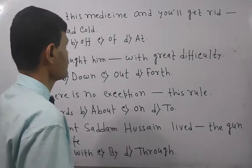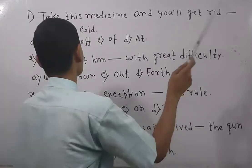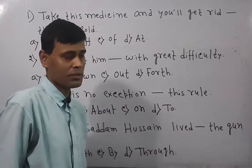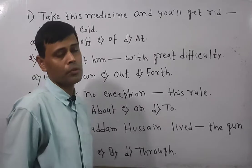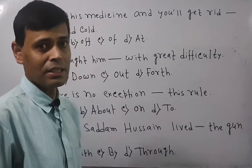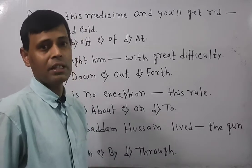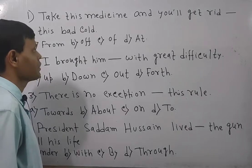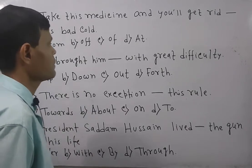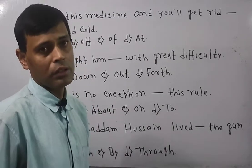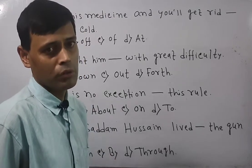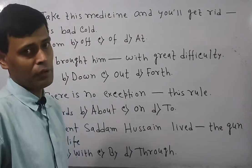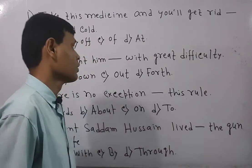Let's get into the class. Look at the first question: 'Take this medicine and you will get rid ___ this bad cold.' The sentence is based on the imperative tone. There is a phrase in English called 'get rid of,' which means escape from something or release from someone. So, 'take this medicine and you will get rid of this cold' means you will have an escape from the cold. Suppose you are suffering from a bad cold — to escape from it, you take the medicine.